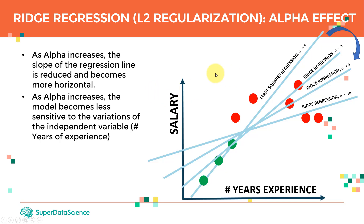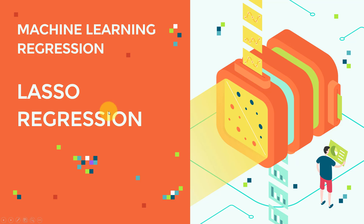As alpha increases, the slope of the regression line is reduced and becomes more horizontal — more flat. You can see that starting from the least squares regression line, increasing alpha keeps reducing the slope. As alpha increases, the model becomes less sensitive to variations in the independent variable, such as years of experience. With the least squares line, a small change in years of experience has a large impact on salary. As the slope is reduced and the line becomes flatter, any change has a much smaller impact on salary — that's the effect of adding regularization.